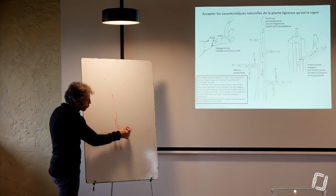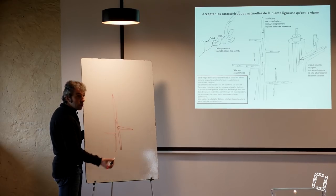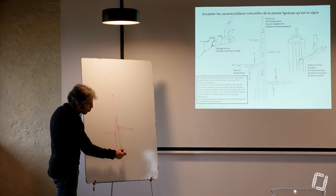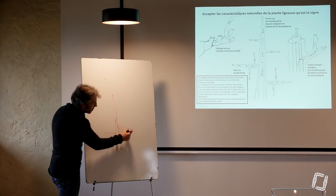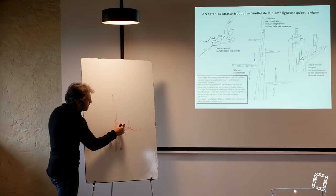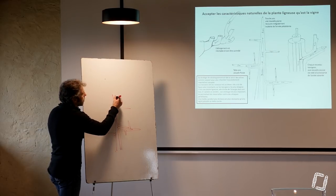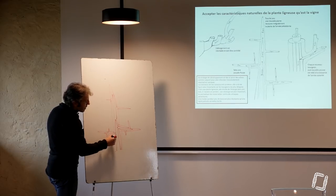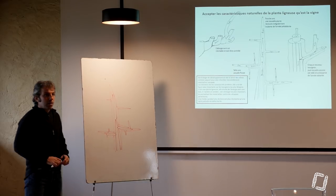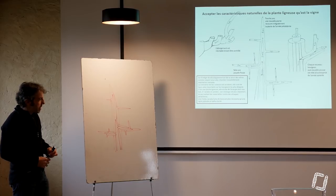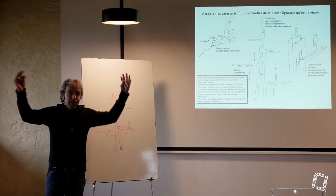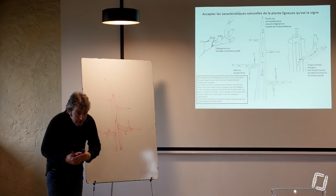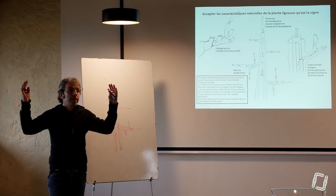Donc une pousse en longueur qui correspond à chaque bourgeon et une pousse en épaisseur qui correspond à une couche supérieure. Tous les ans, on va avoir une nouvelle plante qui pousse par-dessus la plante de l'année précédente. Et ça, de manière indéfinie. Ça continue tout le temps à pousser de cette manière-là. Un platane qui fait 50 mètres, tous les ans, il y a un nouveau platane intégralement par-dessus le platane de l'année dernière.